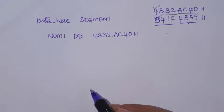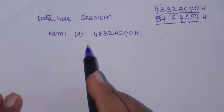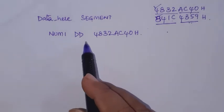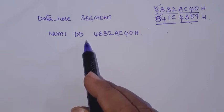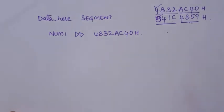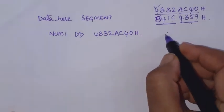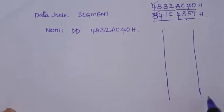So how is it stored in memory? When the assembler converts this to code, for each logical segment there is an address counter — a location counter. It starts from offset address 00, and as it allocates memory for each byte, the location counter is incremented by one. This is how addresses are assigned for this particular number.